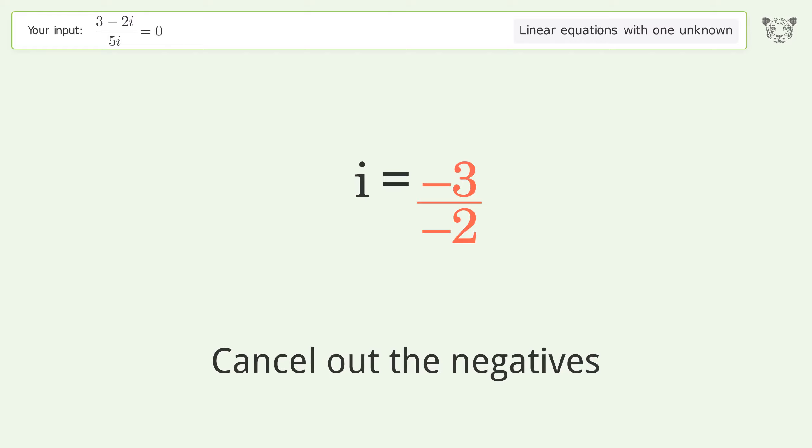Cancel out the negatives. And so the final result is i equals 3 over 2.